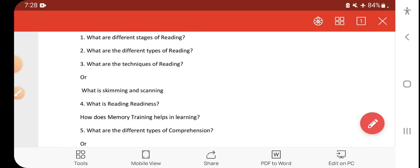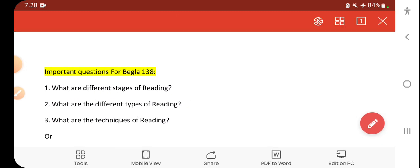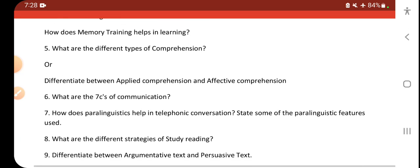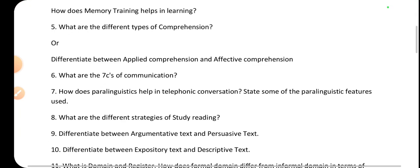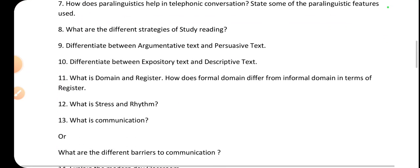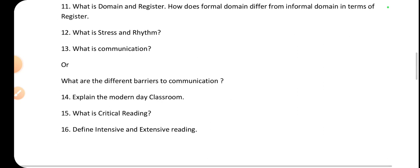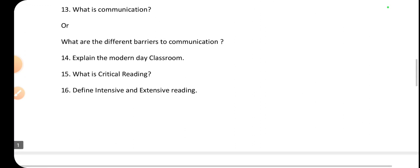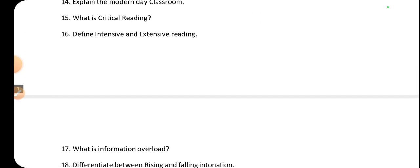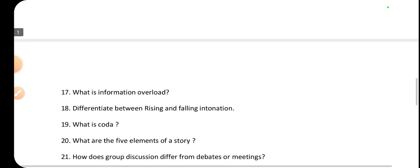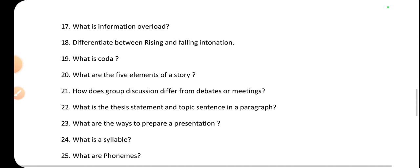Along with that, look at the other texts carefully as well; they may ask related questions. Topics include telephonic conversation, register, domain—these haven't been asked before—paralinguistic features, seven Cs of communication, barriers of communication. These are all very important. Also prepare previous question papers and assignments carefully.